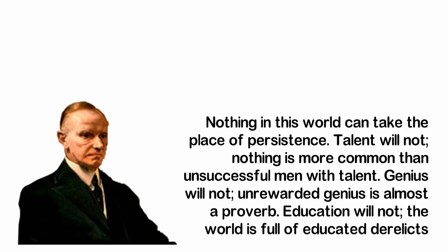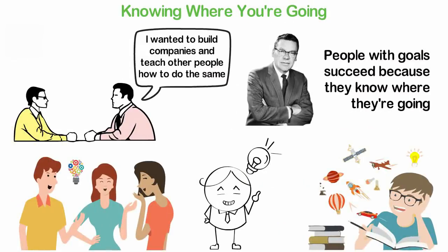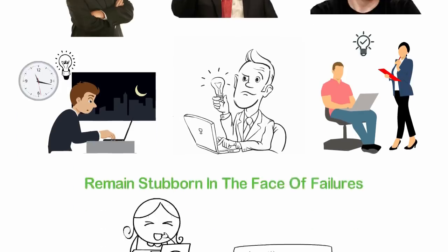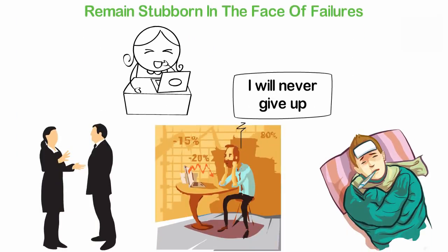In conclusion, here are the three things top most successful people do differently. One: They are specific about what they want out of life. Two: They are focused on that thing or a few things. Three: They never give up when they encounter failures and oppositions.